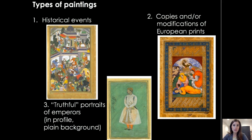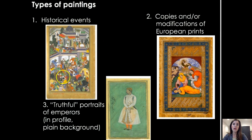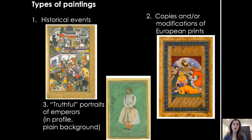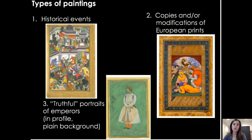We do see a lot of representations of human forms in certain cases. There are types of paintings including historical paintings that recount accomplishments of the rulers. There were also copies and modifications of European prints that were being sent into the Mughal Empire through trade, and also portraits of the Emperor. So in these more secular works of art, we do see images of the human form as permissible — however, in religious structures, you really see these forms avoided.